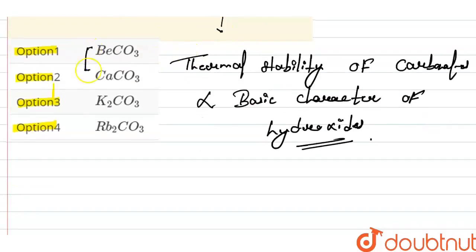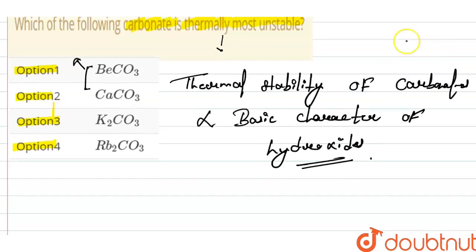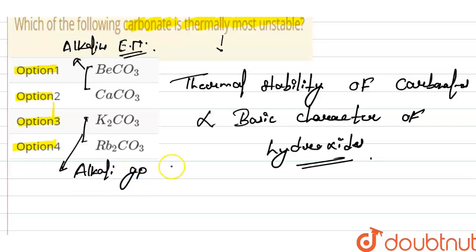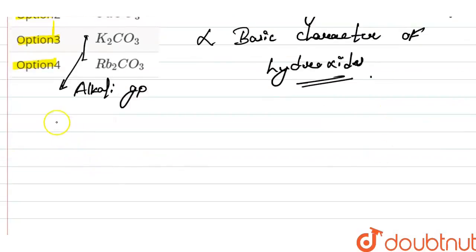We know that beryllium and calcium belong to alkaline earth metals, which is the second group. Potassium and rubidium belong to the alkali group, which is our first group elements.